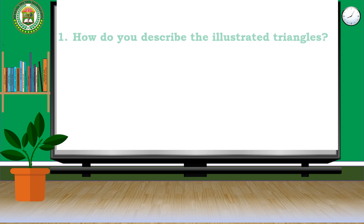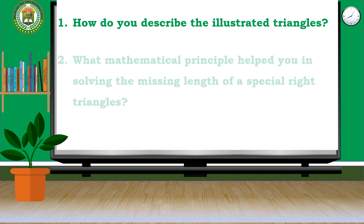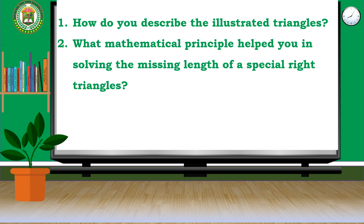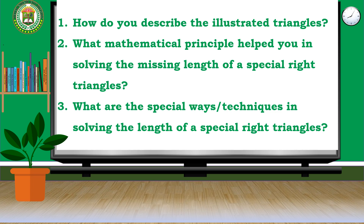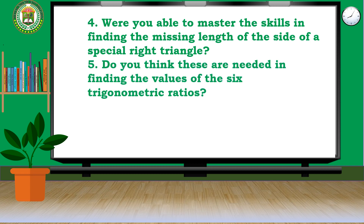Now let us reflect on the following questions: How do you describe the illustrated triangles? What mathematical principle helped you in solving the missing length of special triangles? What are the special ways or techniques in solving the length of special right triangles? Do you think these are needed in finding the values of the 6 trigonometric ratios?